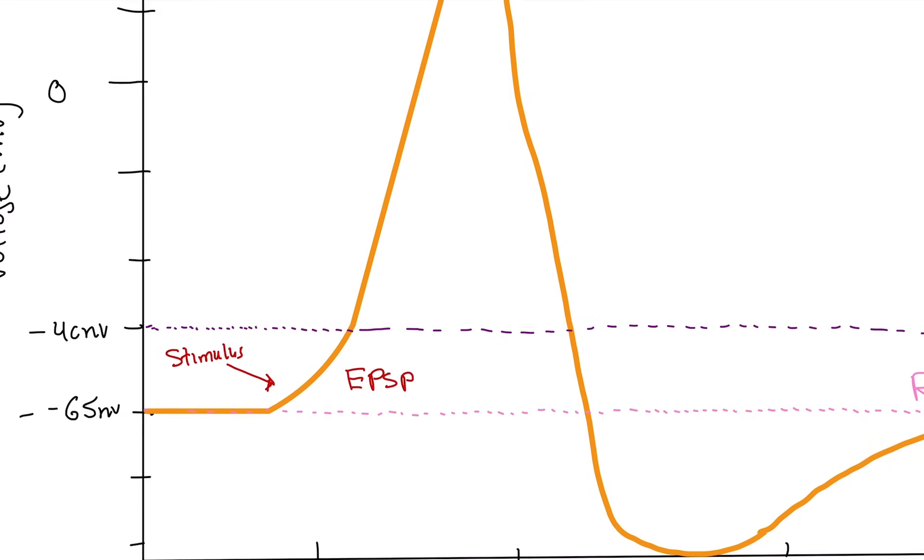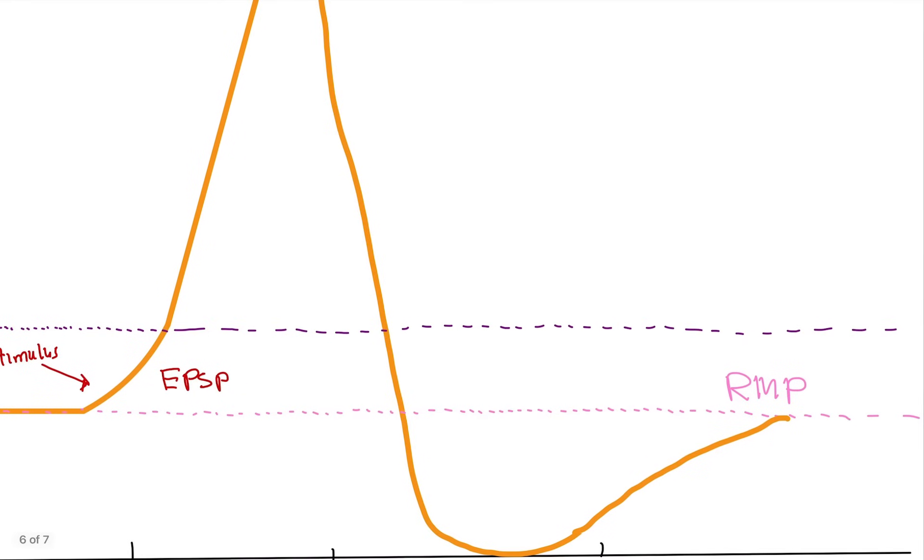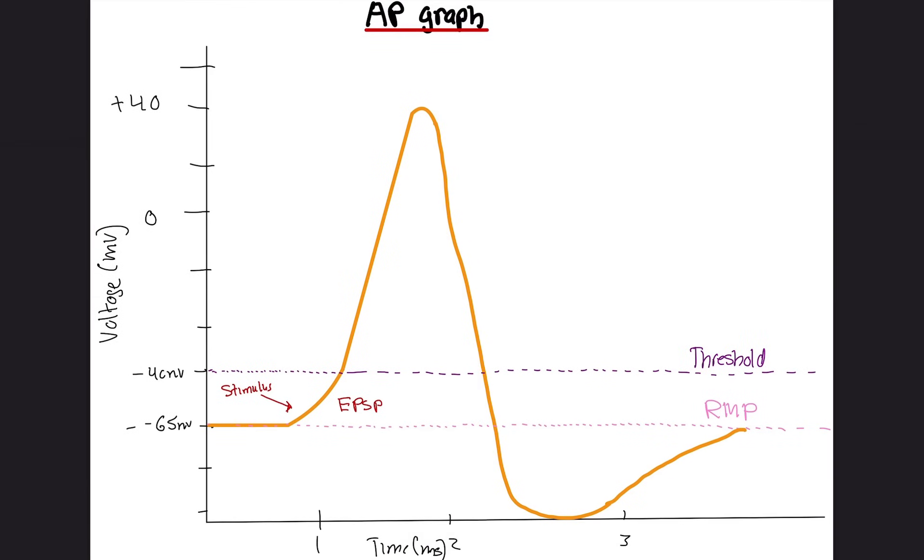So now when the stimulus or the voltage reaches at negative 40 millivolts, we're going to call this the threshold in my example here. On your test, he may say the threshold is at negative 30 millivolts or negative 20 millivolts, whatever. He'll probably tell you this is the threshold. If not, then use this.